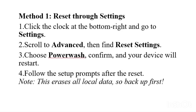The first method is Reset Through Settings. This is the easiest method if your device isn't heavily restricted. Click the clock in the bottom right corner and go to Settings — that is the gear icon. Scroll down to Advanced, then find Reset Settings. Click Power Wash and confirm. Your Chromebook will restart and reset to Factory Settings.